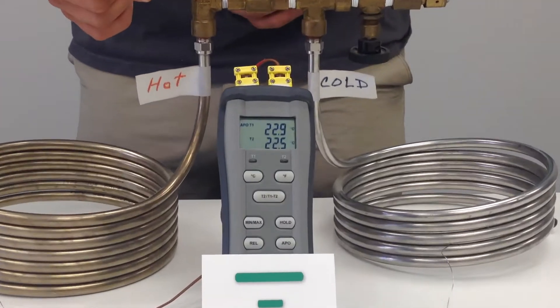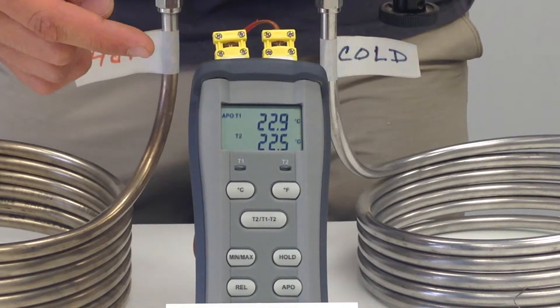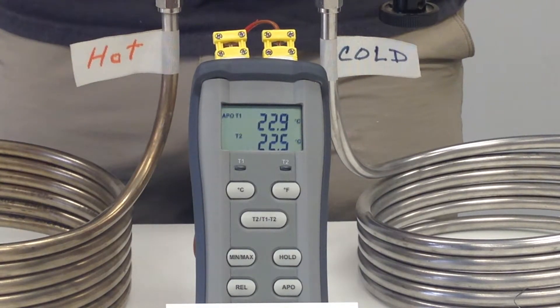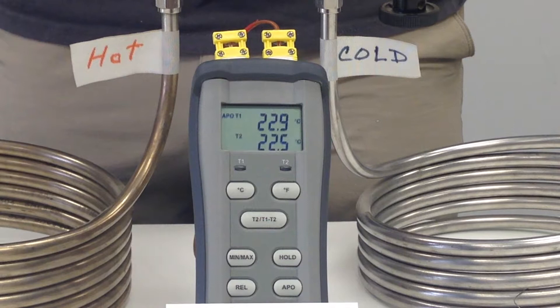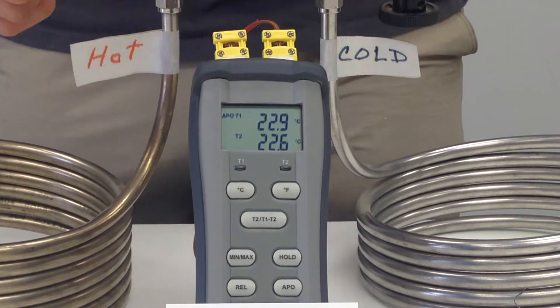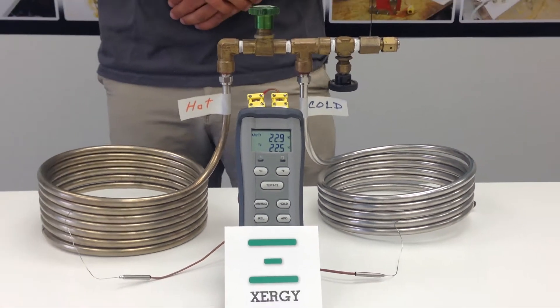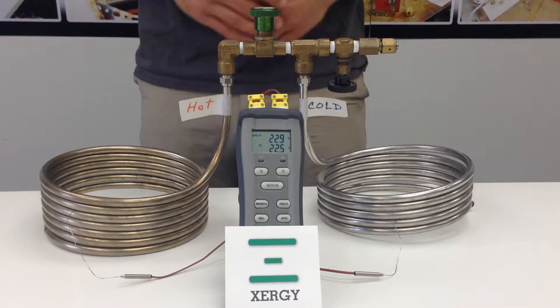We have a thermocouple here where T1, which is the top number, is indicative of the coil on your left and T2, which is the bottom number, is indicative of the coil on your right. These will be the hot and cold coils respectively.